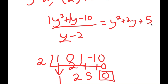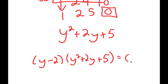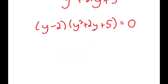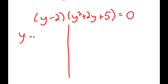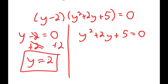So now we can say that y minus 2 times y squared plus 2y plus 5 is equal to 0. Using this equation, we can find all our solutions to our original equation. This gives us two equations: y minus 2 equals 0, and y squared plus 2y plus 5 equals 0. For y minus 2 equals 0, I just add 2 on both sides and get y equals 2, which is the solution we already found.